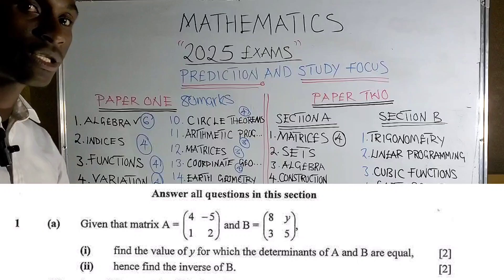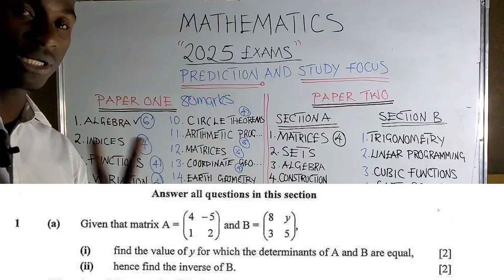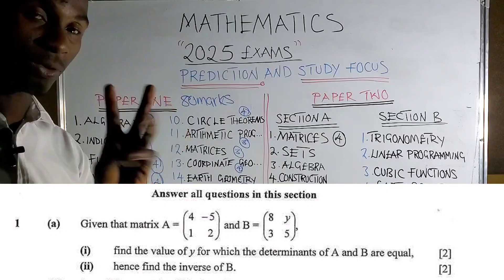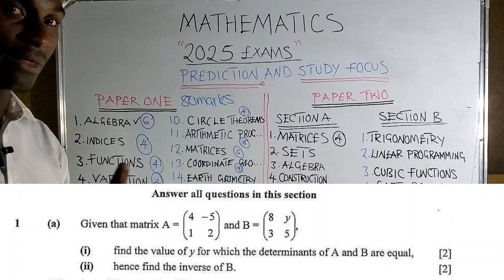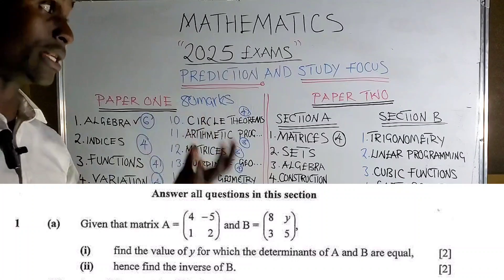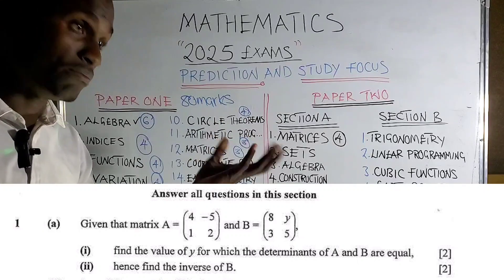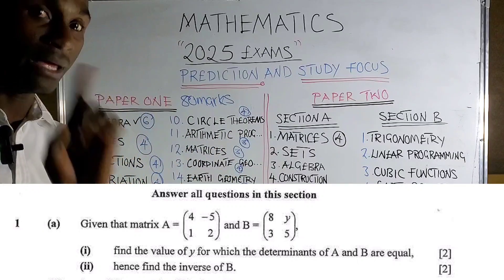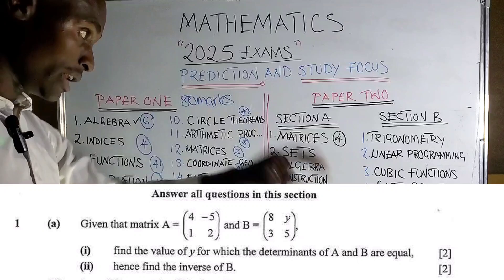The second scenario: you are given two 2x2 matrices — one complete with all four elements, and the other with one or two elements missing. The instruction will say something like 'calculate the value of x given that the determinants of the two matrices are equal.' So you first find the determinant of the complete matrix, then use it to find the missing variable.